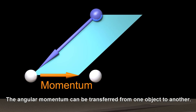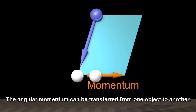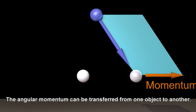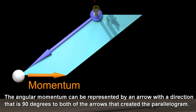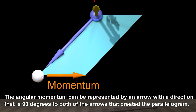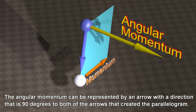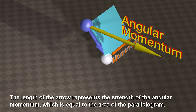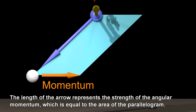The angular momentum can be transferred from one object to another. The angular momentum can be represented by an arrow with a direction that is 90 degrees to both of the arrows that created the parallelogram. The length of the arrow represents the strength of the angular momentum, which is equal to the area of the parallelogram.